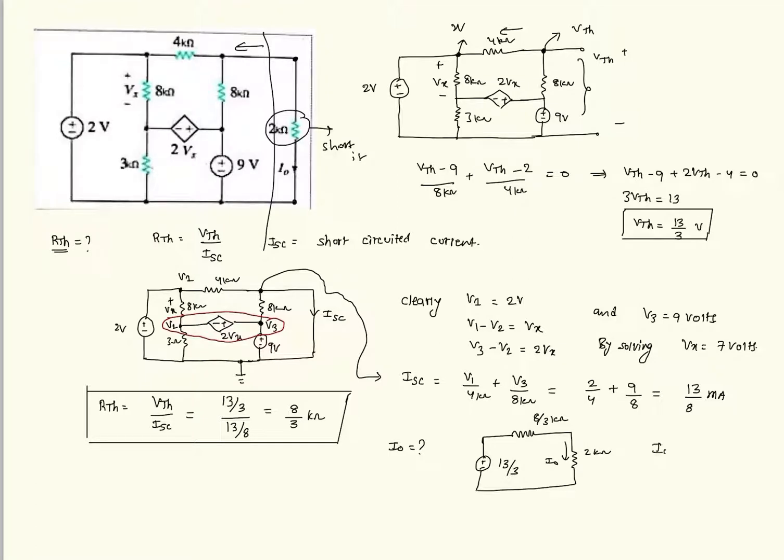So I naught is simply 13 by 3 over 8 over 3 plus 2 kilo ohm. So clearly it is 13 over 14 milli amperes. So I naught is equal to 13 over 14 milli amperes.